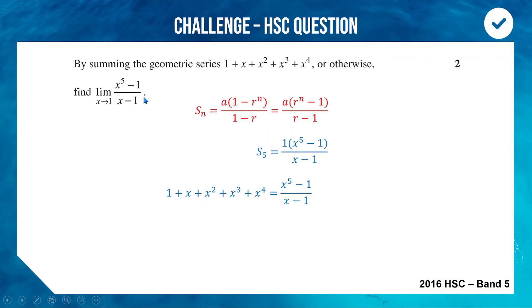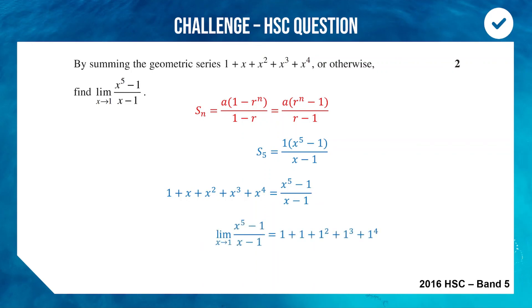The key insight: we can't substitute x = 1 into the right hand side without dividing by zero, but we can substitute x = 1 into the equivalent left hand side. Since both sides are equal, the limit as x approaches 1 of (x⁵ − 1)/(x − 1) equals 1 + 1 + 1² + 1³ + 1⁴ = 5. That's two marks and that's why it's a band five question — the link between the two sides is the tricky part.